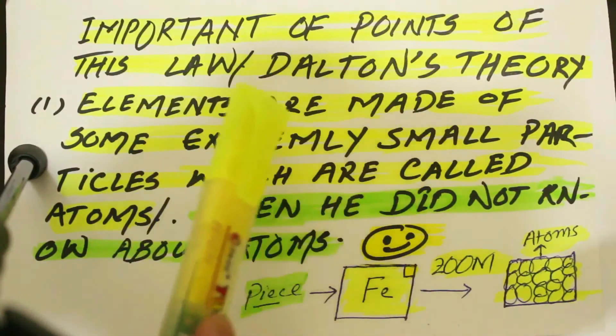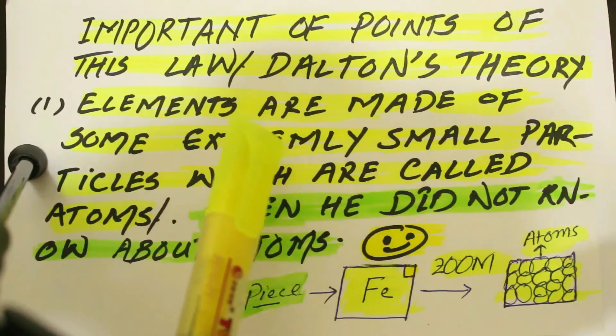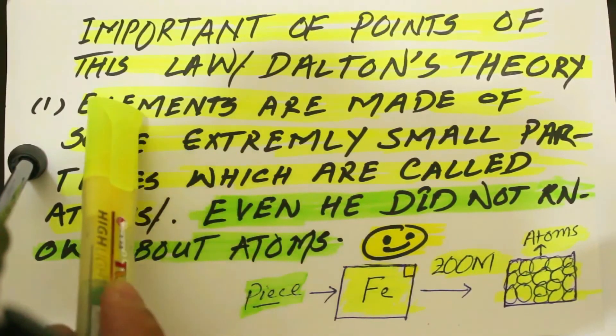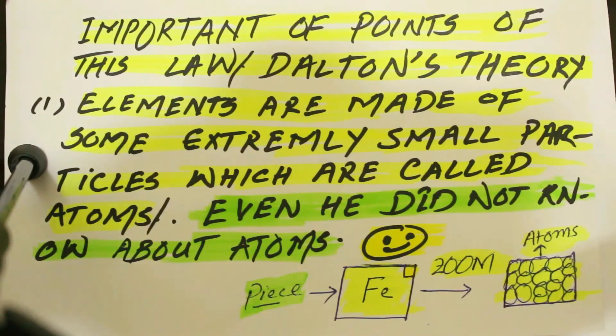Now let's discuss the important points of Dalton's Atomic Theory. The first one is that elements are made up of extremely small particles which are indivisible in nature and they are called atoms. We should keep in mind that atoms of one element are exactly similar in every aspect because they have the same atomic masses.